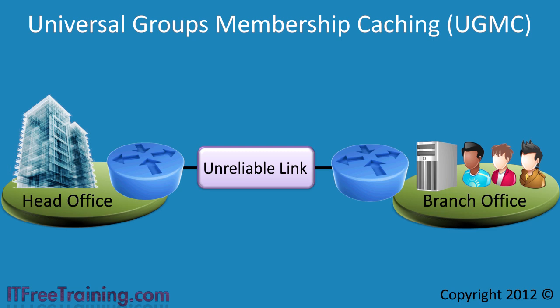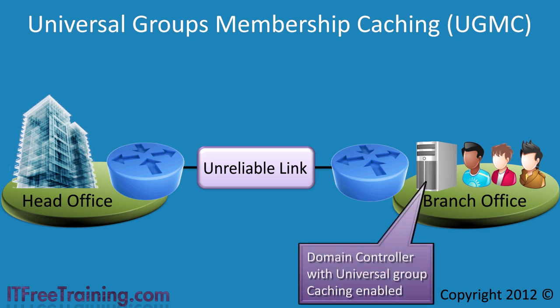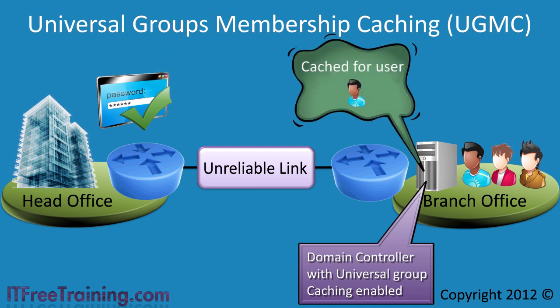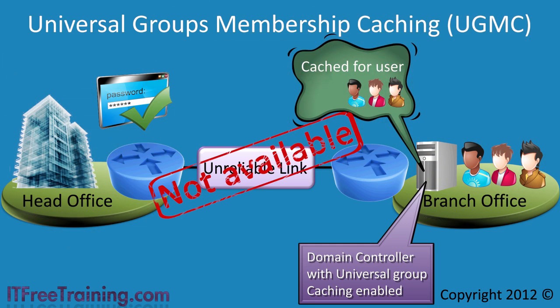To get around this, you can enable universal membership caching on the domain controller. When you enable universal membership caching, the following happens. When a user logs in to that domain controller, the domain controller will contact a global catalog in order to obtain the universal group information. Once the universal group information is obtained, it is stored on that domain controller indefinitely. This will ensure that as long as the user logs into the domain controller when a global catalog server was available to obtain the universal group information, the user will always be able to log in regardless of whether a global catalog server was available or not. If a global catalog server is not available when required, the domain controller will simply use the information in the cache.